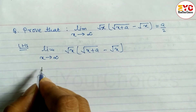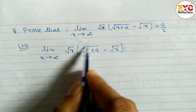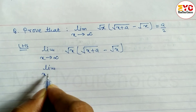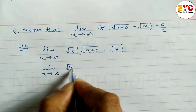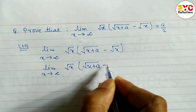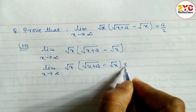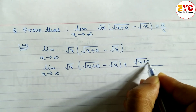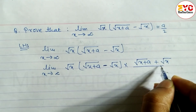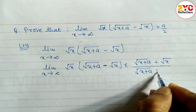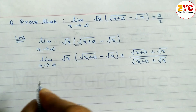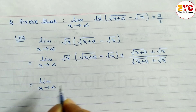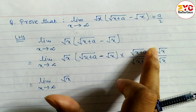To resolve the indeterminate form, we rationalize by multiplying by the conjugate. So we write: limit x tends to infinite of √x times [√(x + a) minus √x] multiplied by [√(x + a) plus √x] divided by [√(x + a) plus √x].